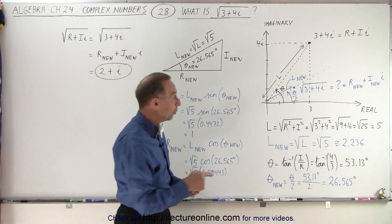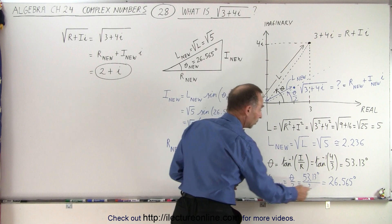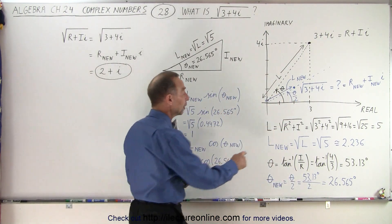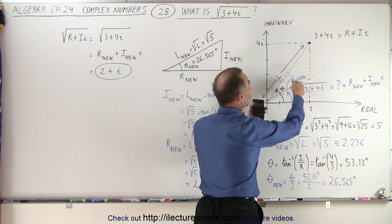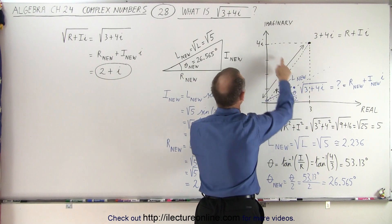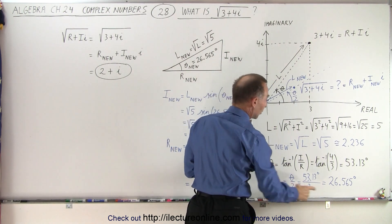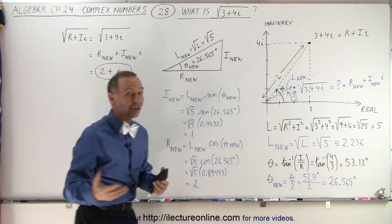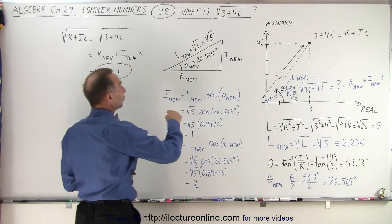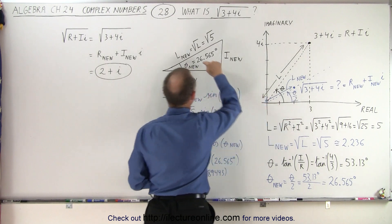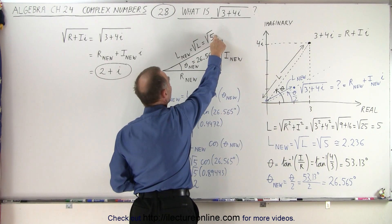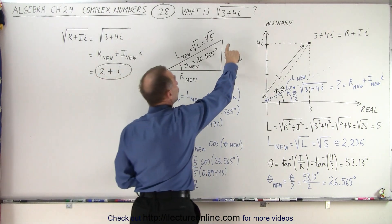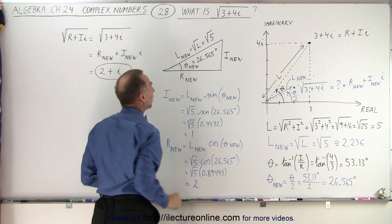The new angle will be half of that: half of 53.13, which is 26.565 degrees. So now we know the length to the new number — the square root — and we know the angle to the line connecting the origin to that new point representing the square root of our original complex number. What I'm drawing here is a triangle. The length of the hypotenuse is going to be the square root of 5, the angle is 26.565 degrees, and now we're looking for the new imaginary part and the new real part.